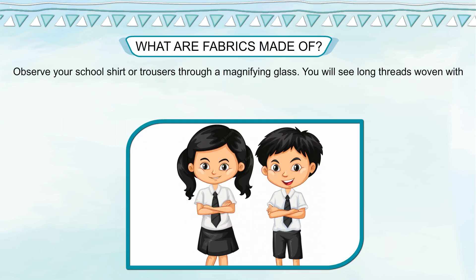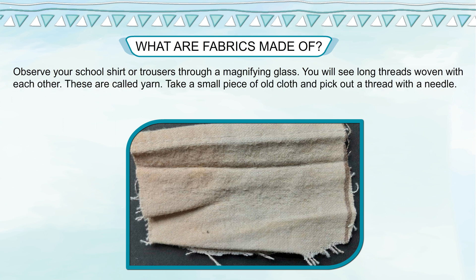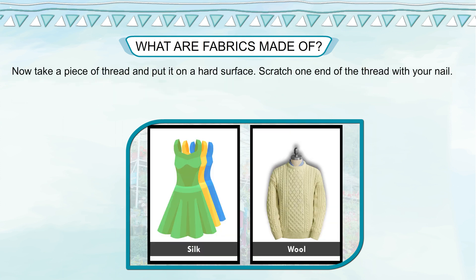What are fabrics made of? Observe your school shirt or trousers through a magnifying glass — you will see long threads woven with each other. These are called yarn. Take a small piece of old cloth and pick out a thread with a needle. All clothes are made by weaving yarns.